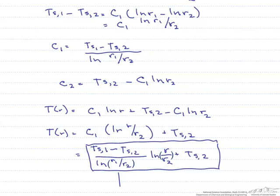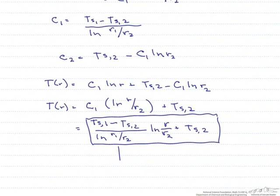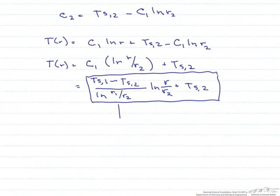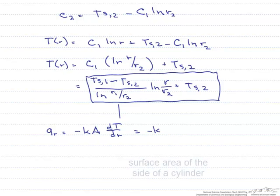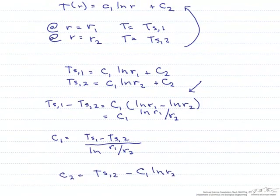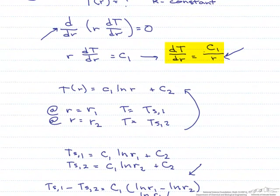Now let's look at a couple other things that we can find once we have this temperature distribution. The first thing is let's look at the heat transfer rate. Qr equals minus k*A*dT/dr where our area is 2πrl times dT/dr which is just c1 over r. Where do we get that? Well if we come back here to our very first integration, dT/dr is c1 over r.